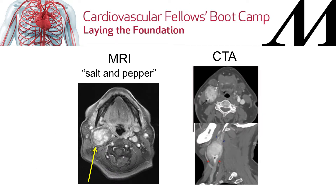On representative MRI and CT imaging, you can see the classic salt-and-pepper appearance on MRI, and a heterogeneous appearance on CTA. This allows preoperative planning to assess how extensive and involved the tumor is.